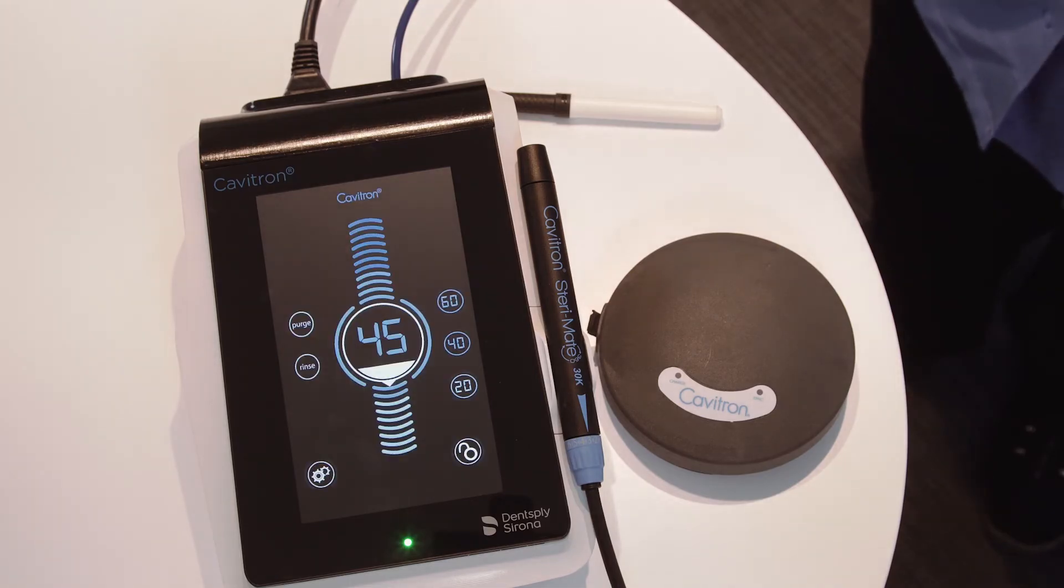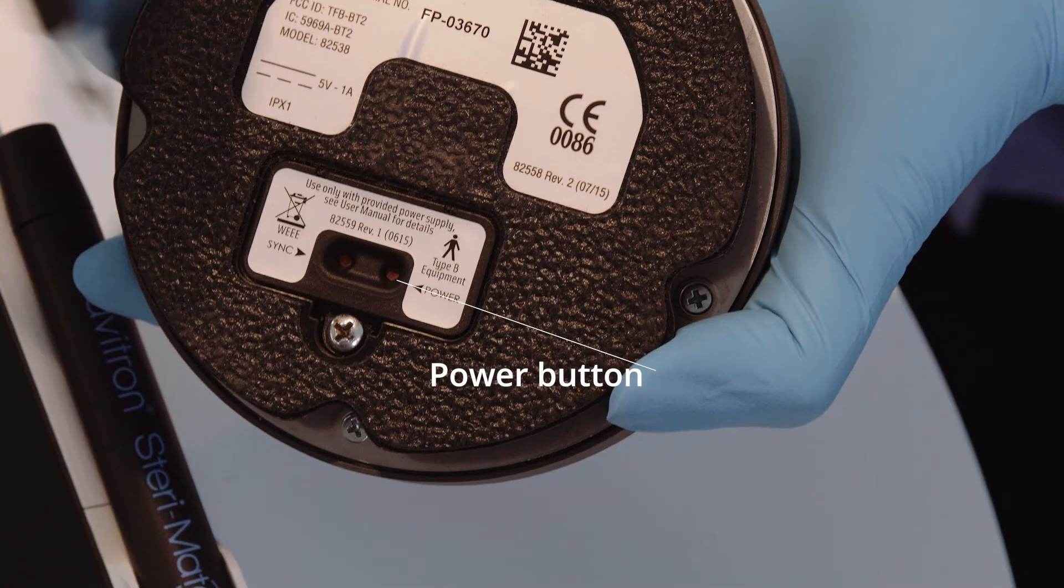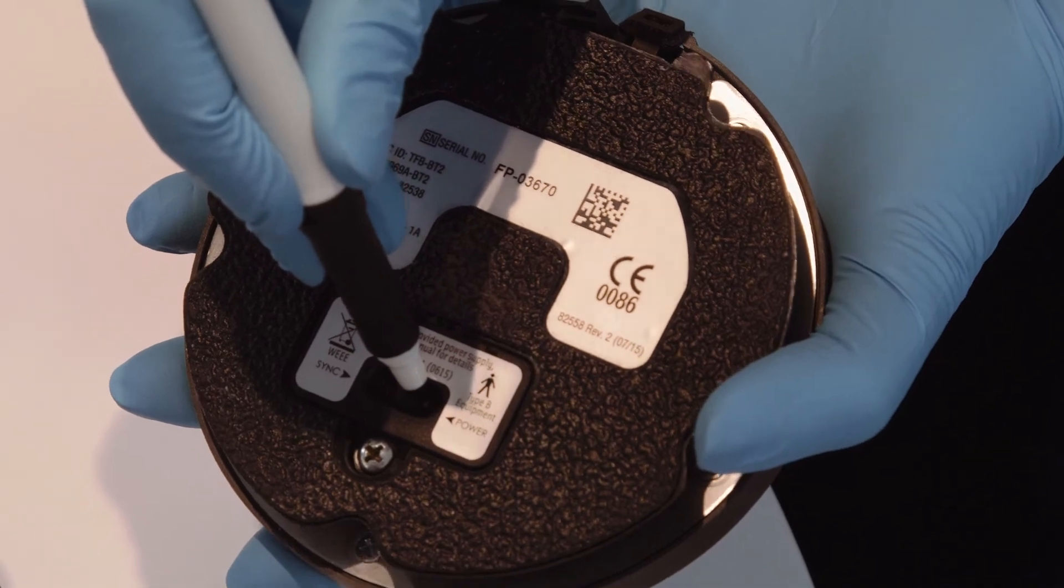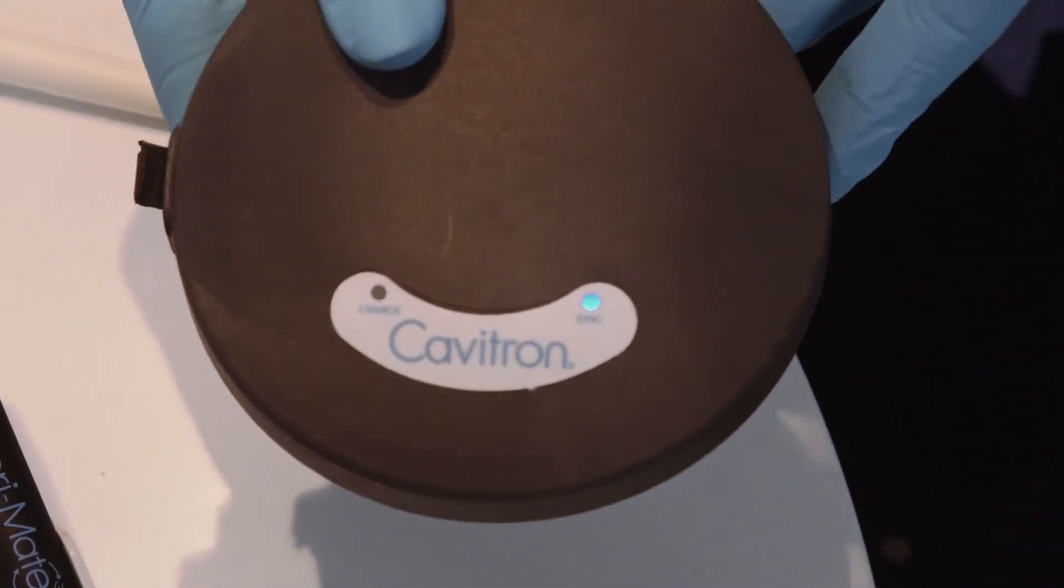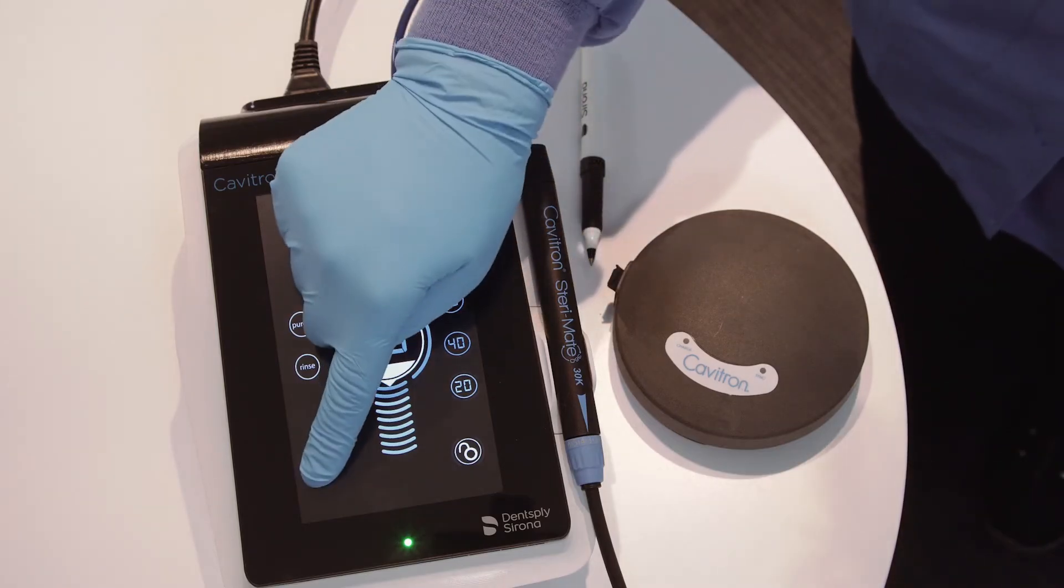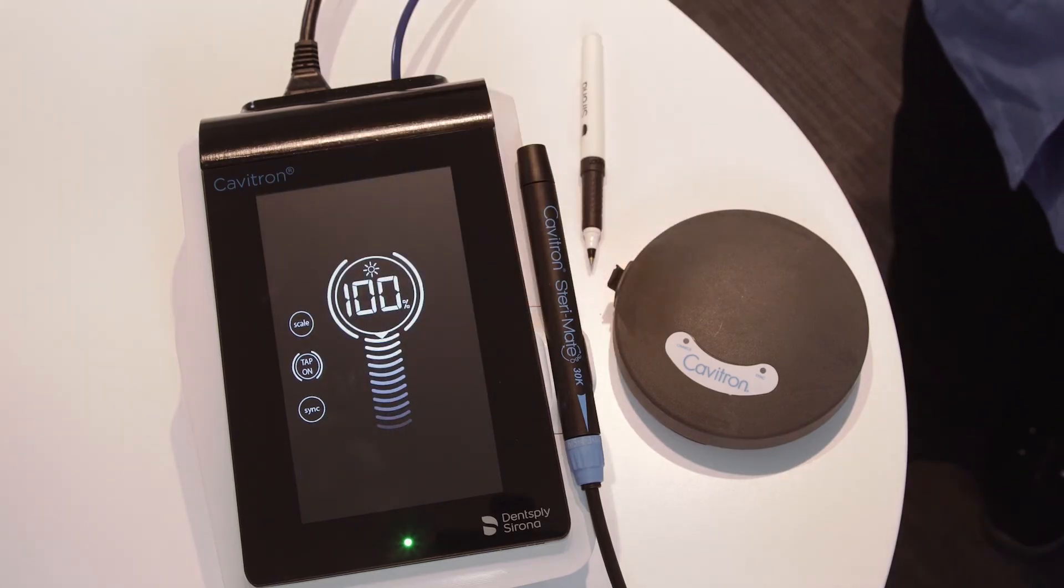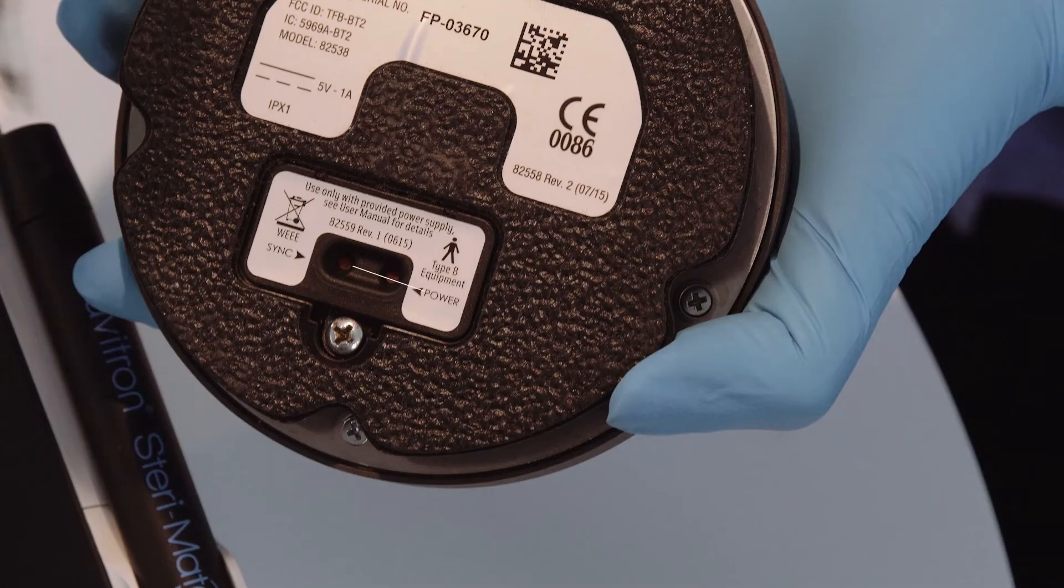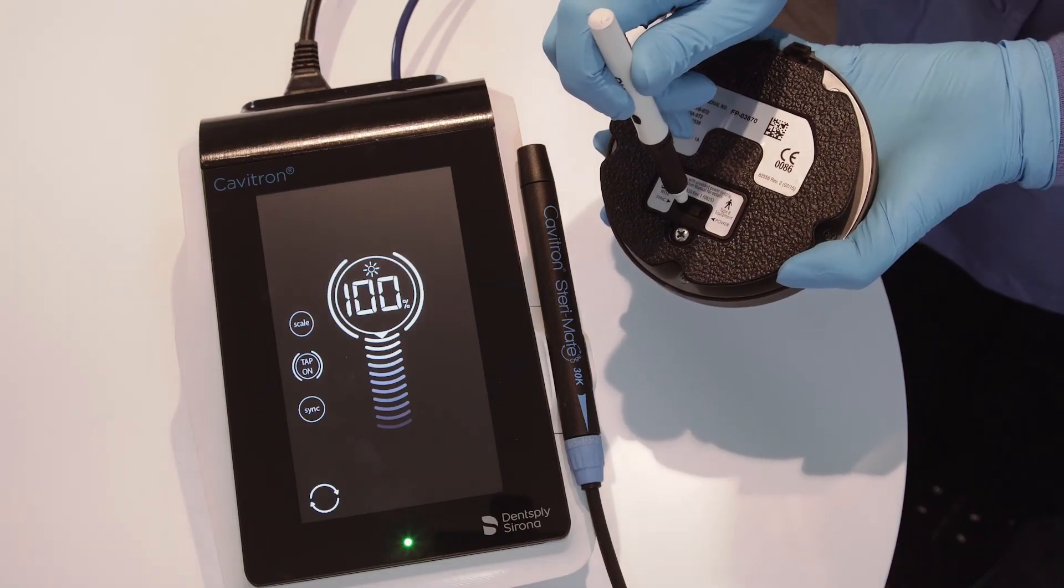Next, turn on the foot pedal by pressing the power button on the bottom of the foot pedal and hold for at least three seconds. A light on the top of the foot pedal will illuminate to verify power. Next, press and hold the settings icon until the settings screen appears. Tap the sync icon on the settings screen, followed by pressing the red sync button on the bottom of the foot pedal and hold for at least three seconds.